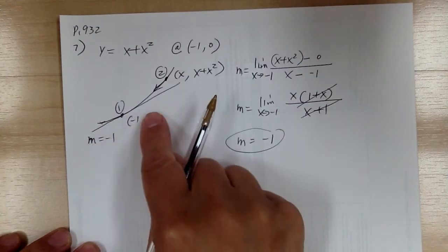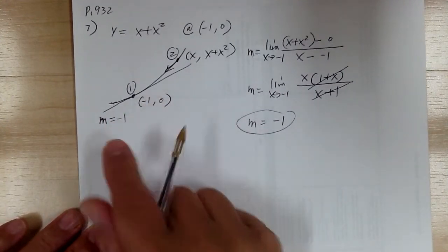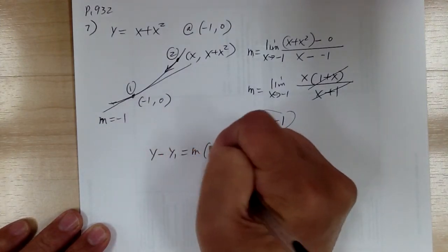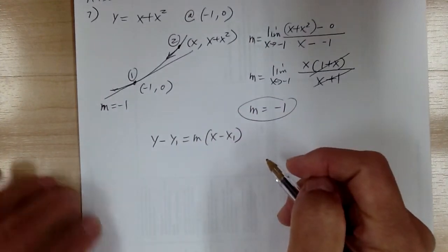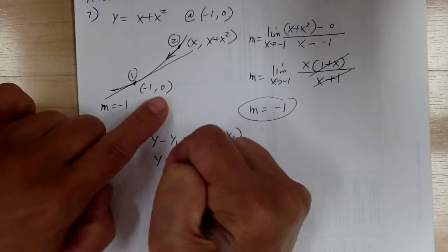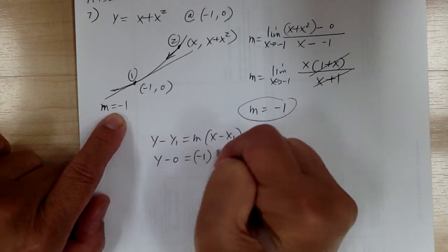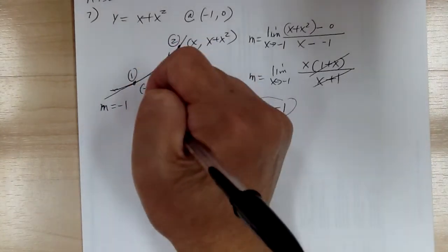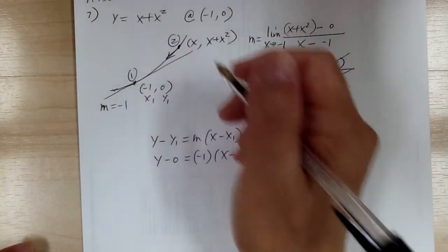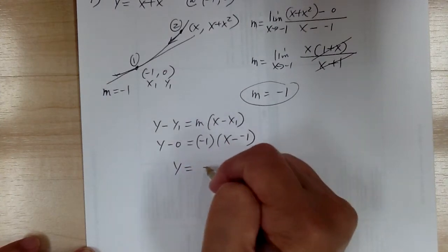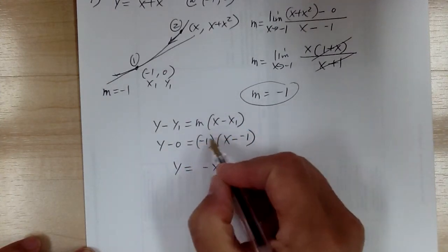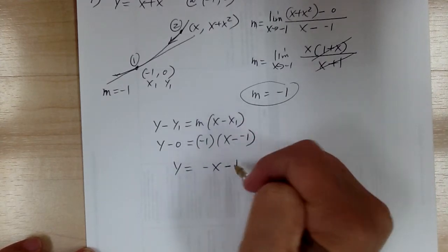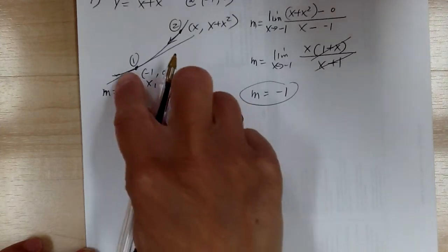Once you find that slope equals negative 1, you have to use the point-slope form: y minus y1 equals m times x minus x1. So you get y minus 0 equals negative 1 times x minus negative 1. That's your x1, y1. Work it out — you get y equals negative x. Distribute — three negatives give you one negative. And that's your equation for the tangent line.